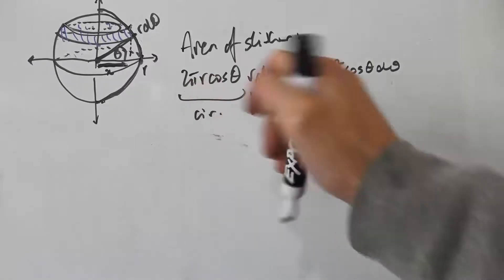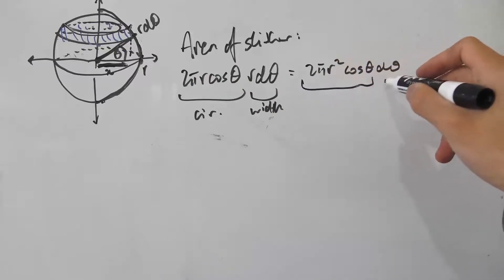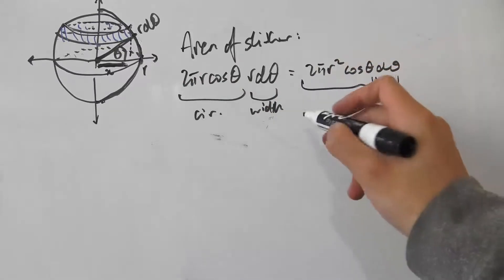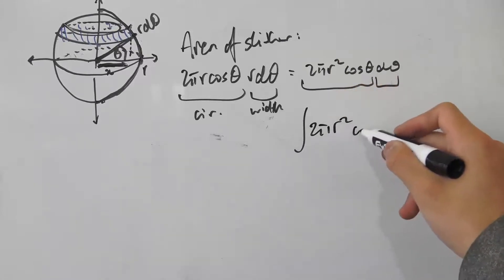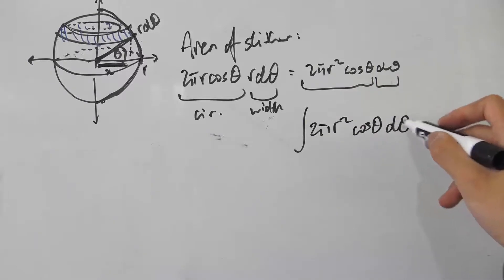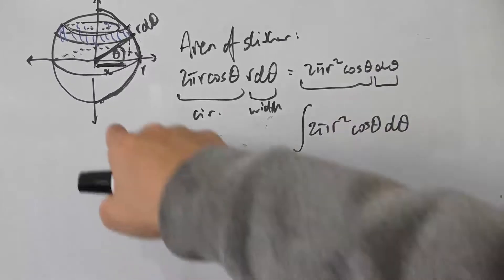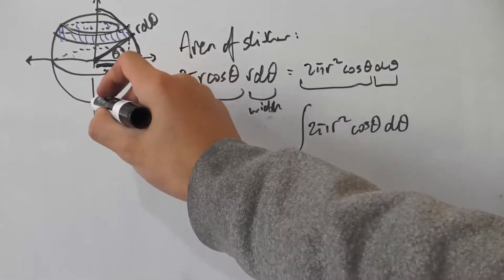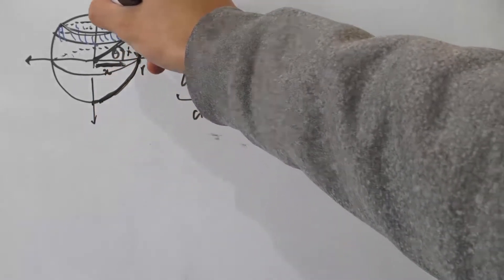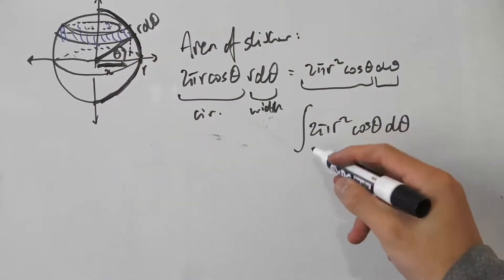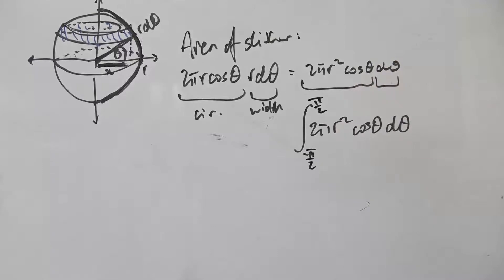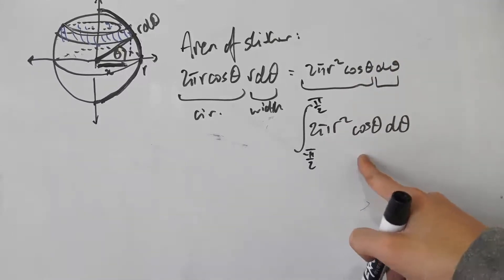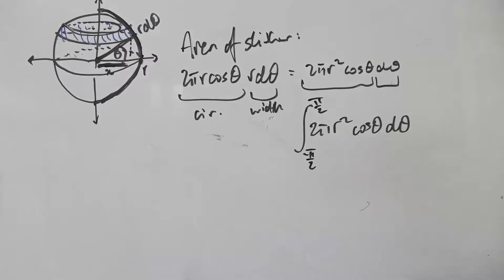This is similar to what we're doing with the sphere here. We have this part here which is the function part, and this is the variable of integration. Now we can rewrite this as an integral. We have the integral of 2πr² cos θ dθ. We need to find out what our lower and upper bounds are. As I said before, we're sweeping θ from negative π/2 all the way up to π/2. So our bounds will be negative π/2 and π/2. We have a definite integral that we can evaluate now.